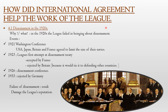Let's move to the first subtopic: how did international agreements help the work of the League? First, disarmament in the 1920s. In the 1920s, the League failed in bringing about disarmament. Key events: in 1921, the Washington Conference — USA, Japan, Britain, and France agreed to limit the size of their navies. In 1923, the League's first attempt at disarmament was accepted by France but rejected by Britain, because it would tie Britain to defending other countries. In 1926, a disarmament conference was held, and in 1933 it was rejected by Germany.